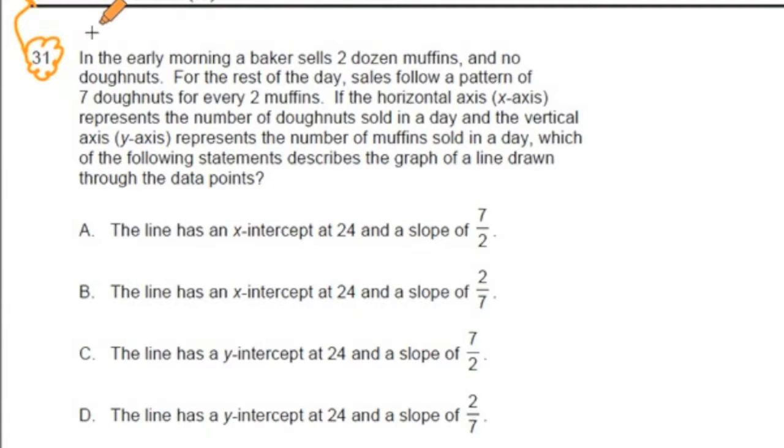For number 31 it says: In the early morning, a baker sells two dozen muffins and no doughnuts. For the rest of the day, sales follow a pattern of seven doughnuts for every two muffins.